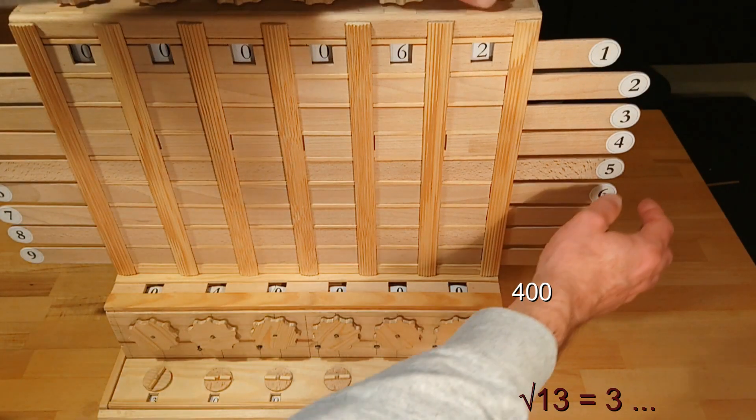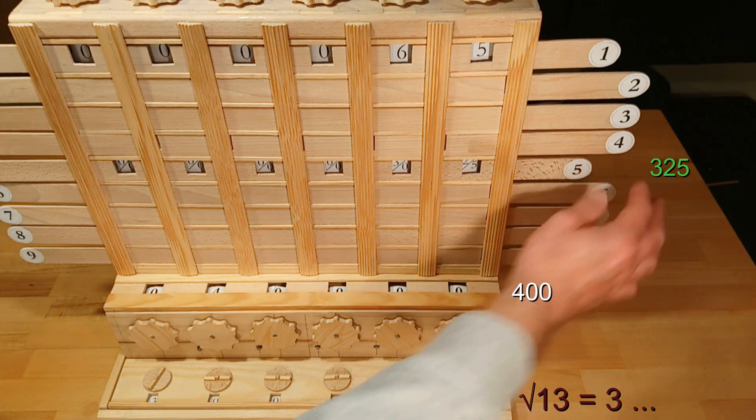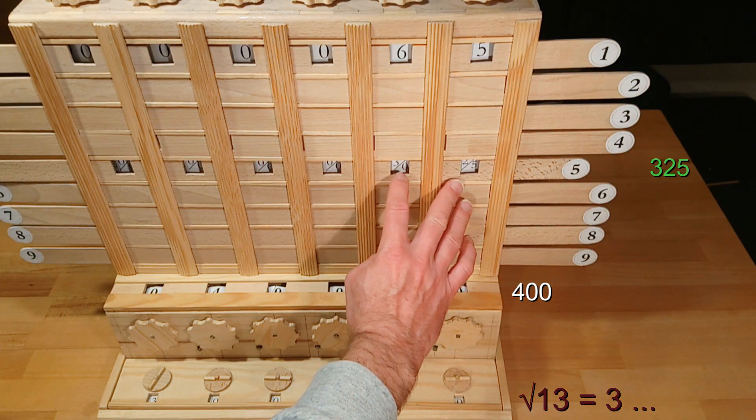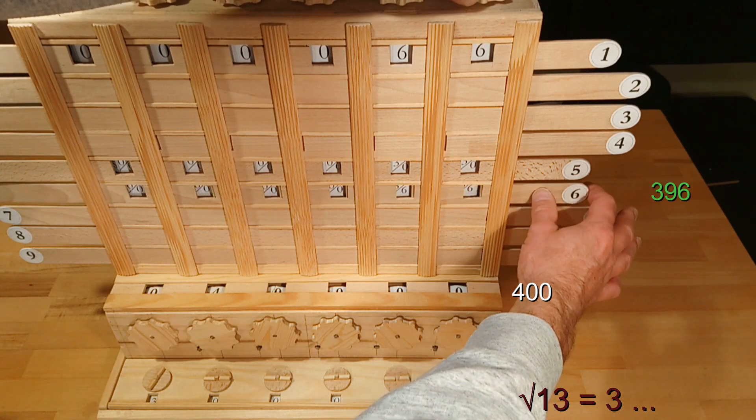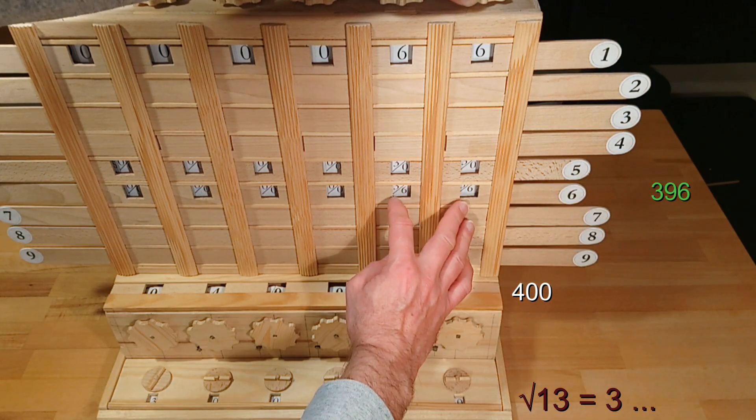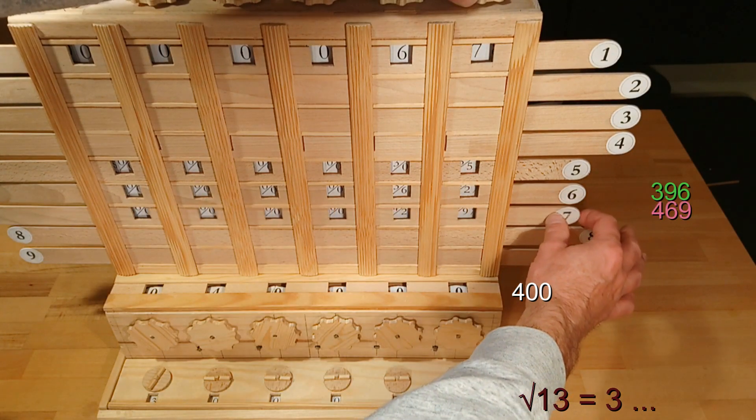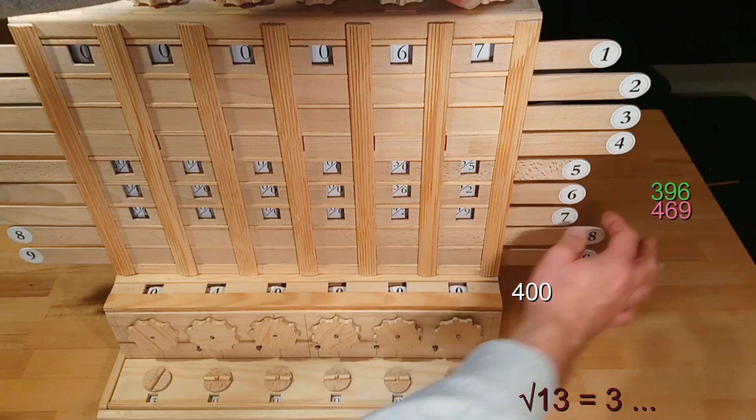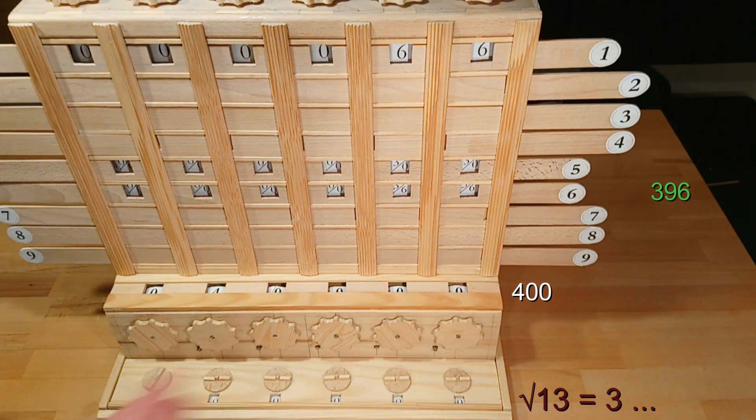We are now searching for the number 60 plus x multiplied by x that is less or equal 400. Let's try 5. 65 times 5 would be 325 which is less than 400. Now let's try 6. 66 times 6 is 396 which is also less than 400. 7 would be too much because it would be more than 400. Therefore 6 is the second result digit, the first decimal place after 3.